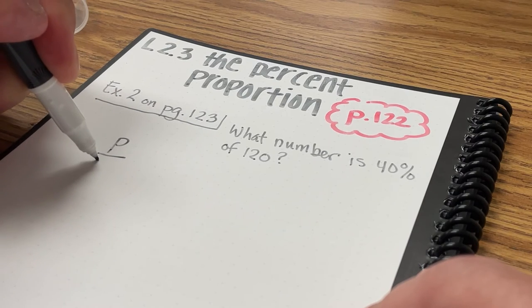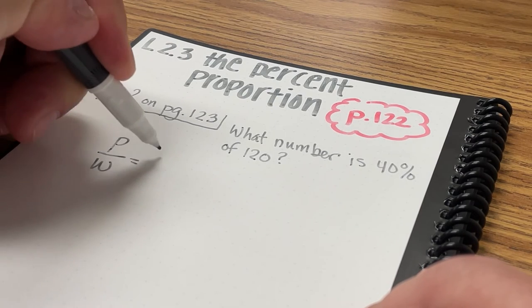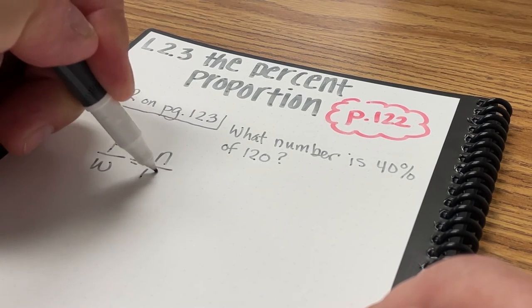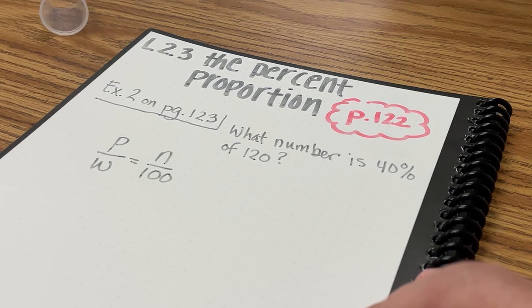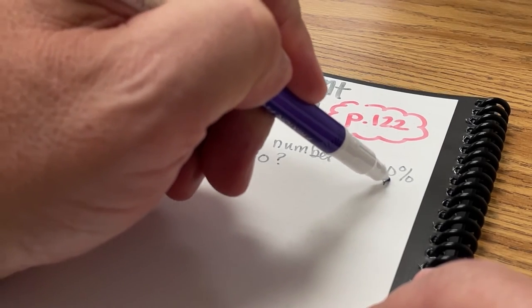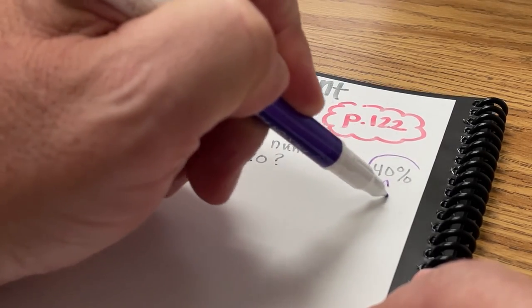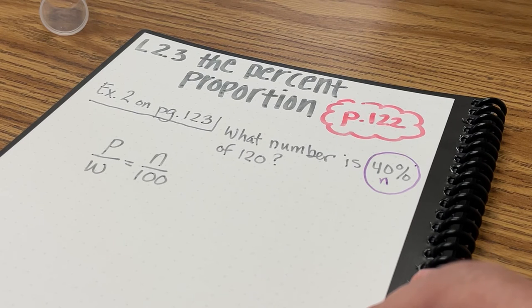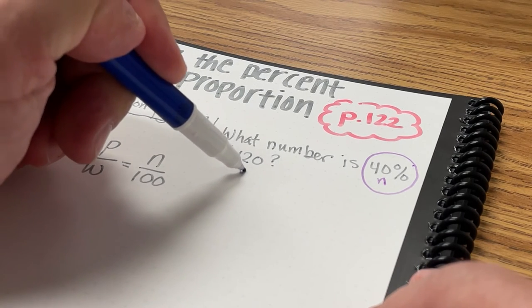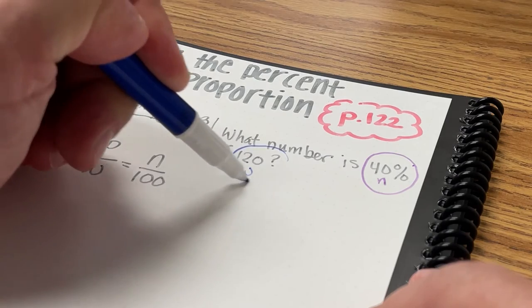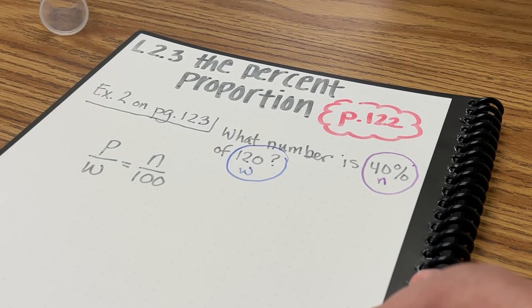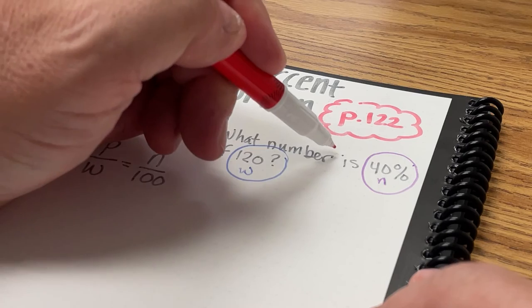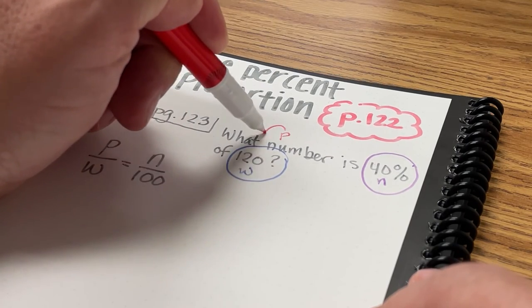Example 2 on page 123, we're trying to find what number is 40% of 120. So I'm going to start out with the same percent proportion: P over W equals N over 100. My N is going to be 40. My 120 is going to be my W or my whole. So I'm going to solve for P, which is going to be my what number.